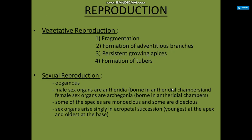Reproduction: two types of reproduction are found in Riccia. First is vegetative reproduction. Vegetative reproduction occurs by fragmentation, formation of adventitious branches, persistent growing apices, and formation of tubers — four methods in total.